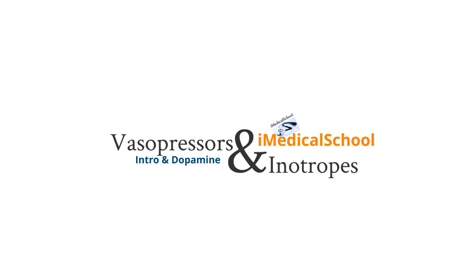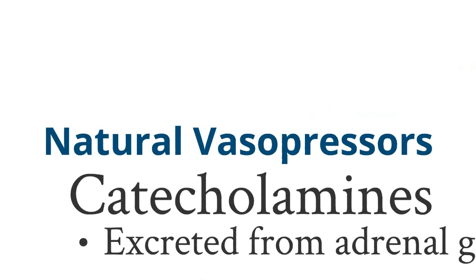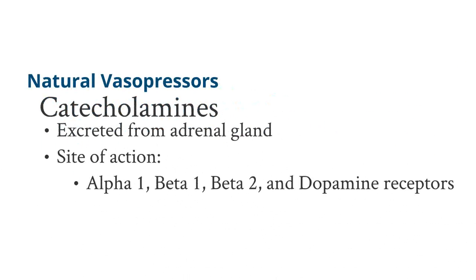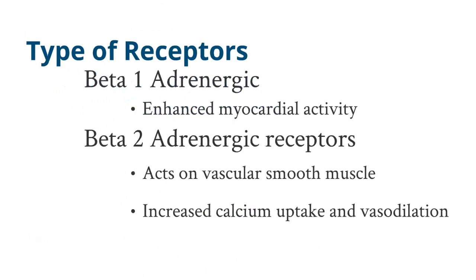We commonly use vasopressors and inotropes in patients who are hypotensive because of various causes like sepsis. But our body has natural vasopressors called catecholamines. Catecholamines are excreted from the adrenal gland and they work at different receptor sites. These include alpha 1, beta 1, beta 2, and dopamine receptors. Each of these receptors has a different physiological effect, so using different vasopressors and inotropes causes different effects on the body.